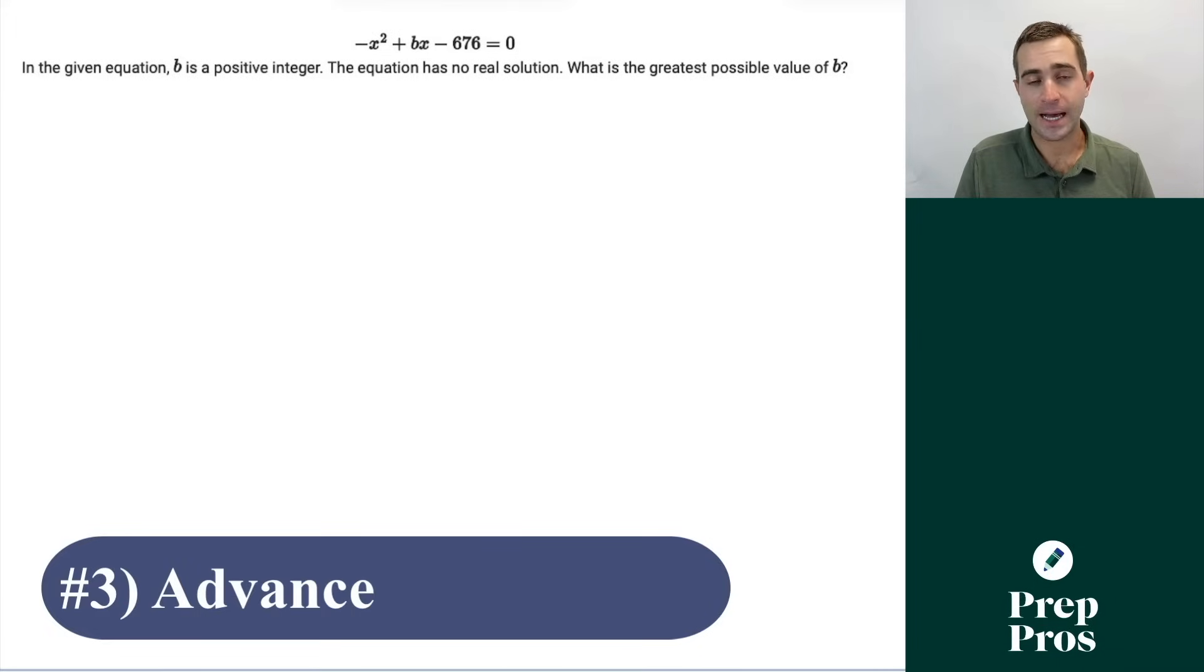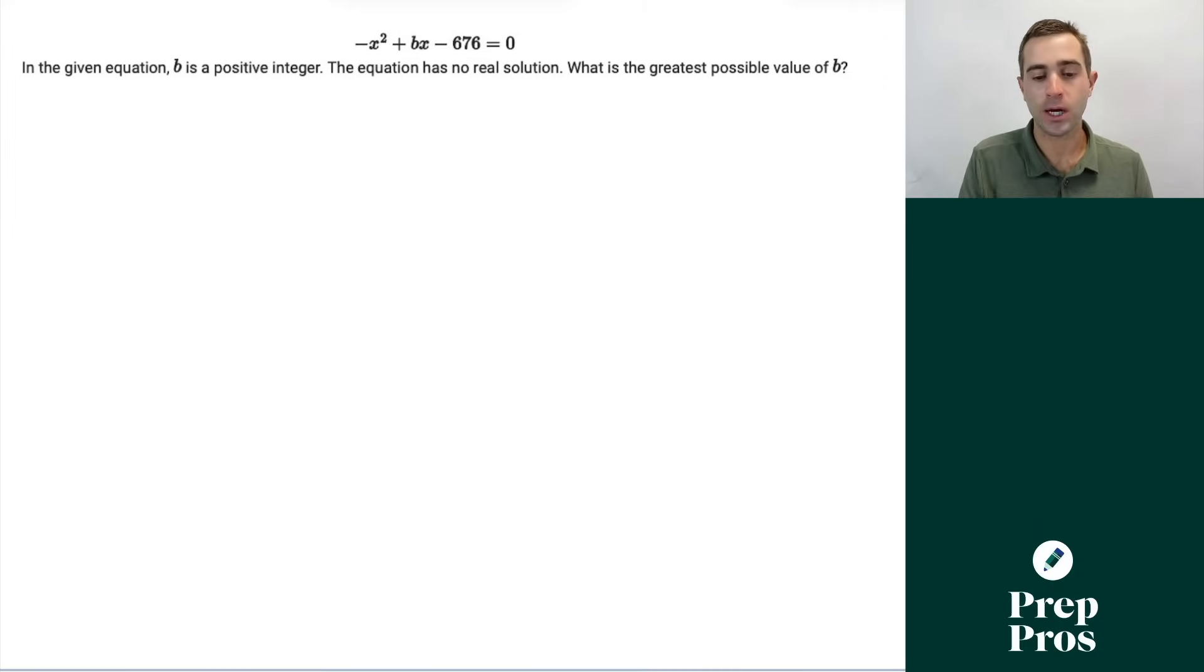The next thing you're going to see on the SAT, especially in that second more difficult module, are advanced quadratics questions. One of the most common concepts they love to test on are discriminant rules. Here we see in the given equation, B is a positive integer. The equation has no real solution. What is the greatest possible value of B? Anytime you are asked about the number or type of solutions of a quadratic, it's a discriminant question in some way.